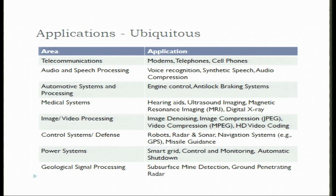Let me highlight a few of the areas — a very small fraction of the applications which use these. For instance, in communications, we use them in the design of modems, telephones, modern cell phones for 3G, 4G and 5G wireless communication systems. In audio and speech processing, we use it for voice recognition, synthesizing artificial speech, and audio compression for storage and transmission. We also use it in automotive systems — for instance, controlling the engine of a car or vehicle, the transmission, controlling fuel injection, and designing appropriate braking systems such as anti-lock braking systems.